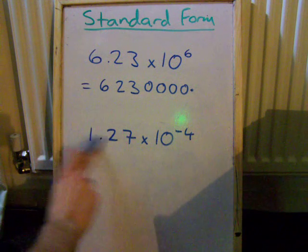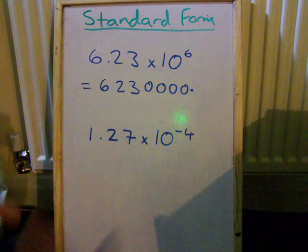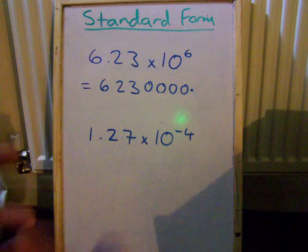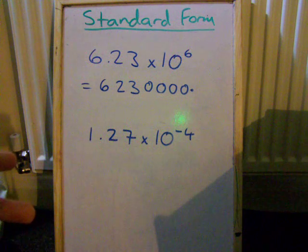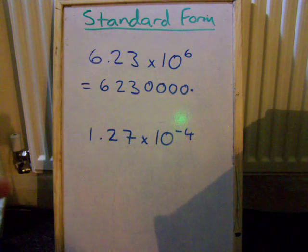Now we've got 1.27 times 10 to the minus 4. You probably remember if you're in the C's that minus 4 means 1 over 10 to the 4, or divided by 10 to the 4.